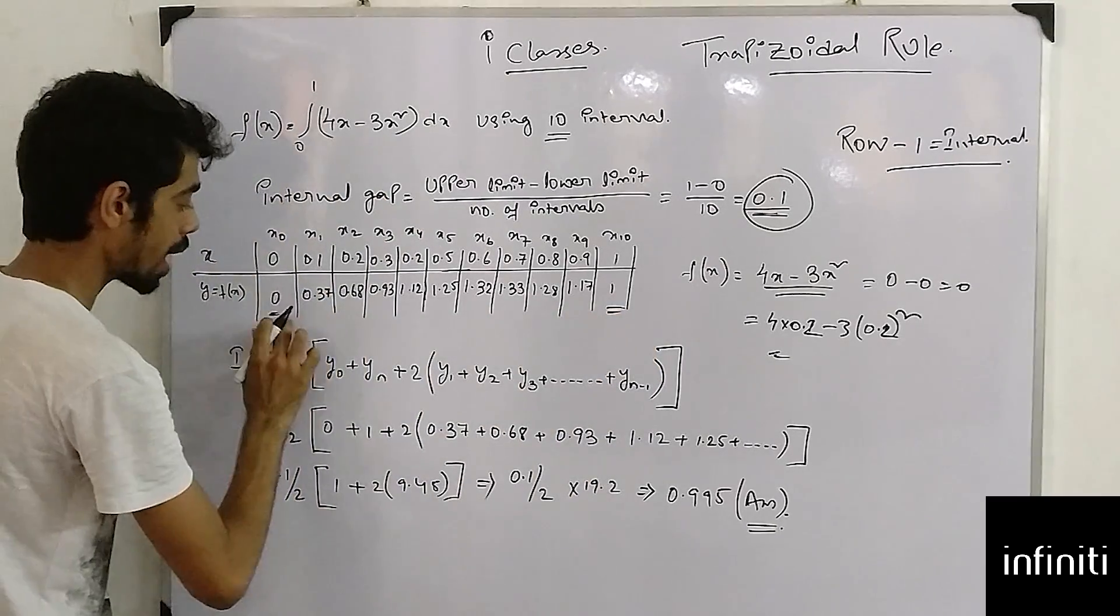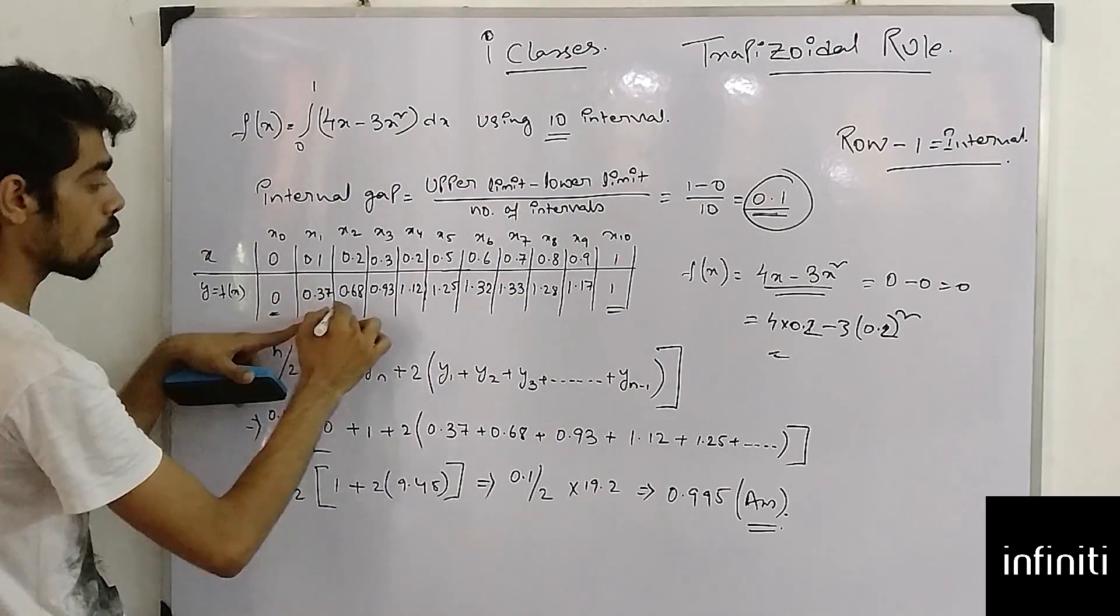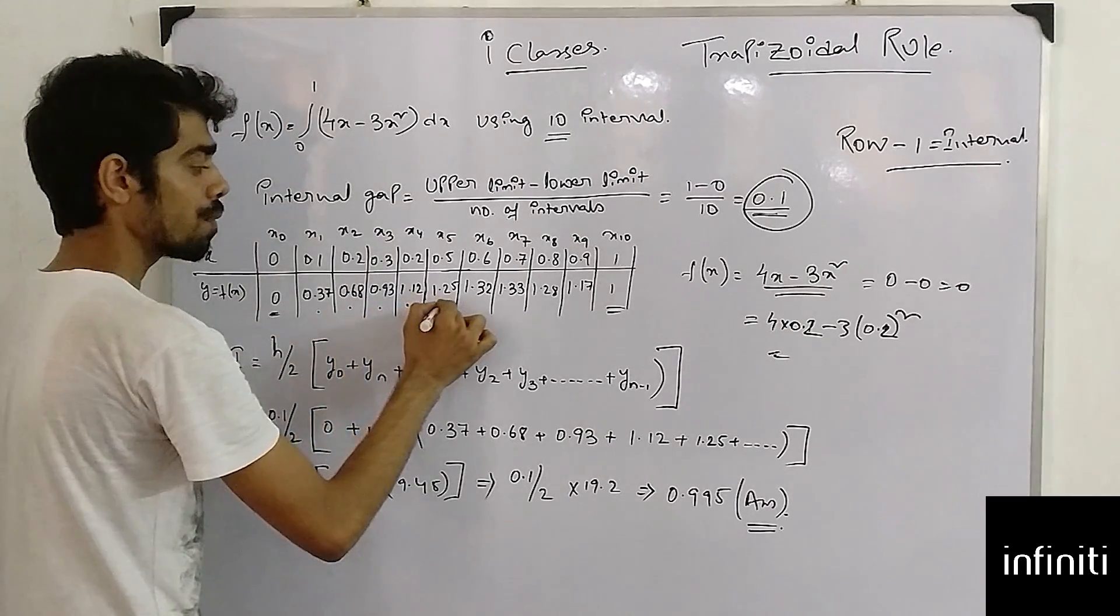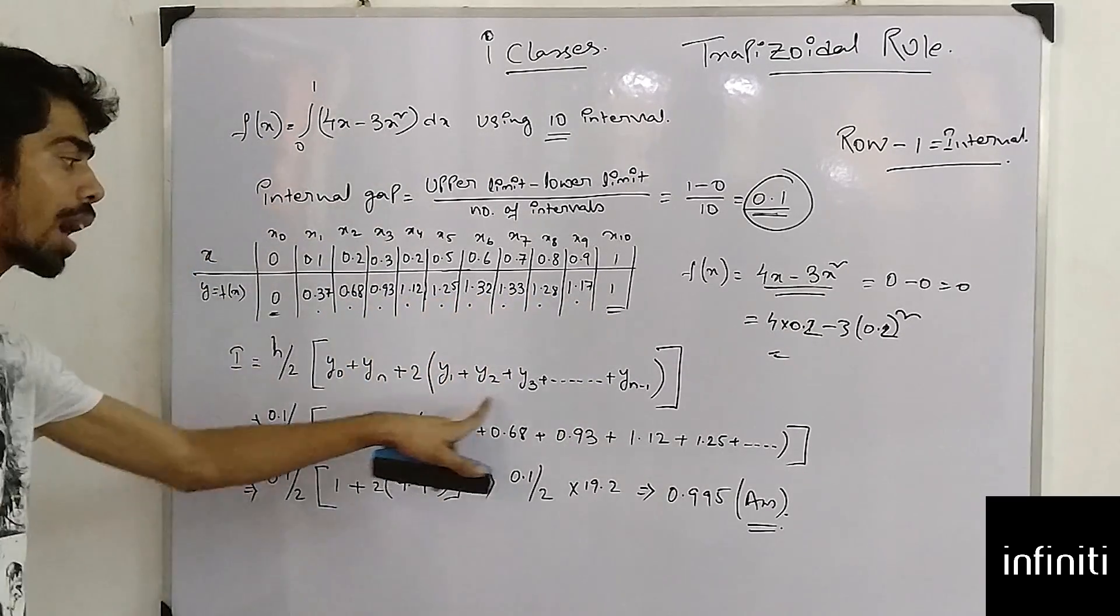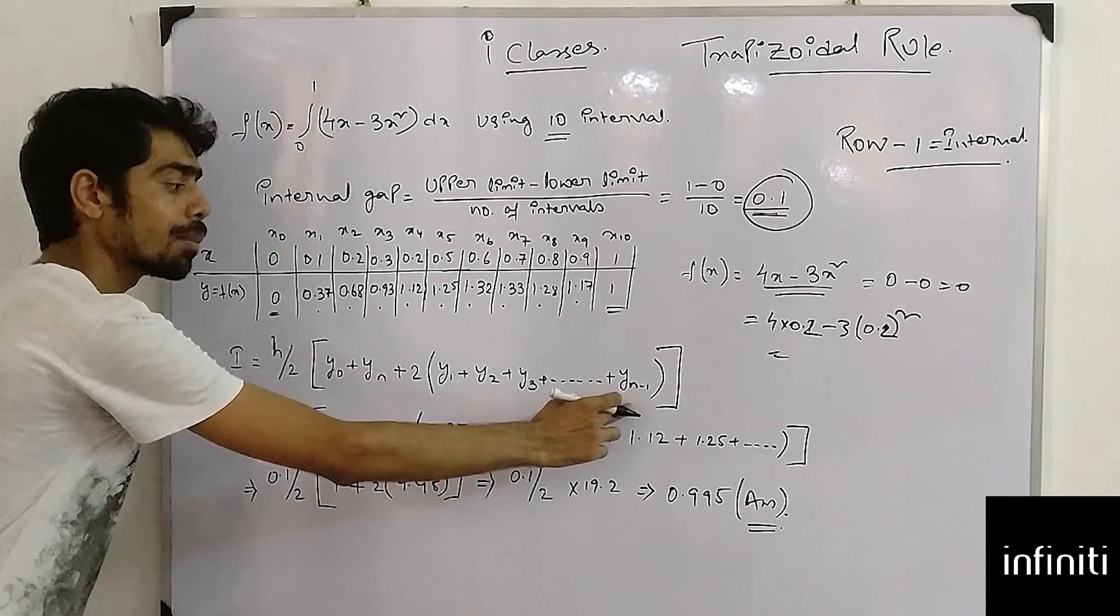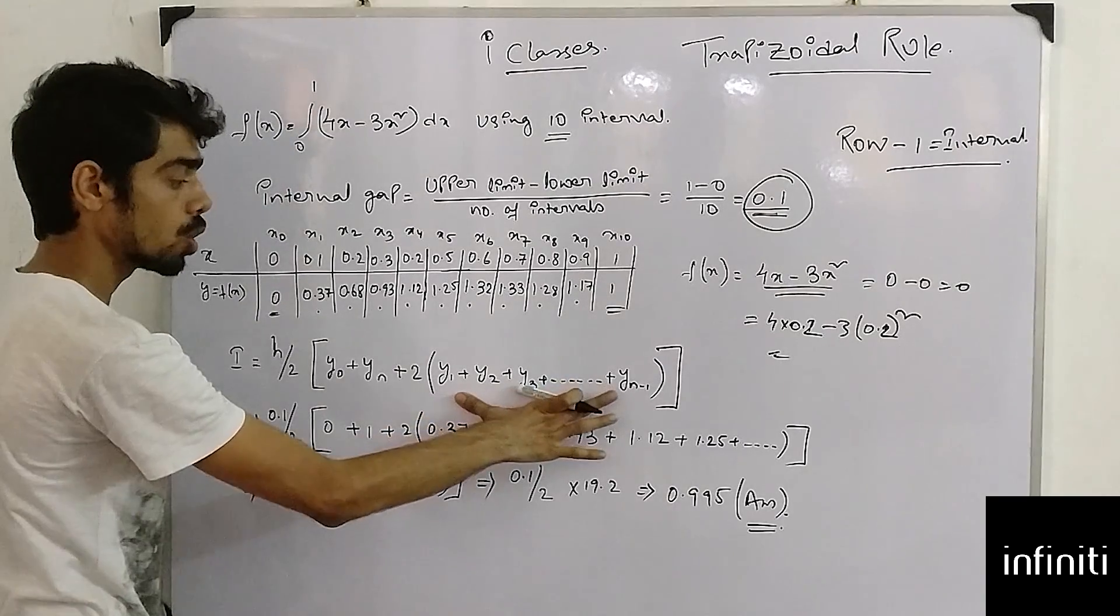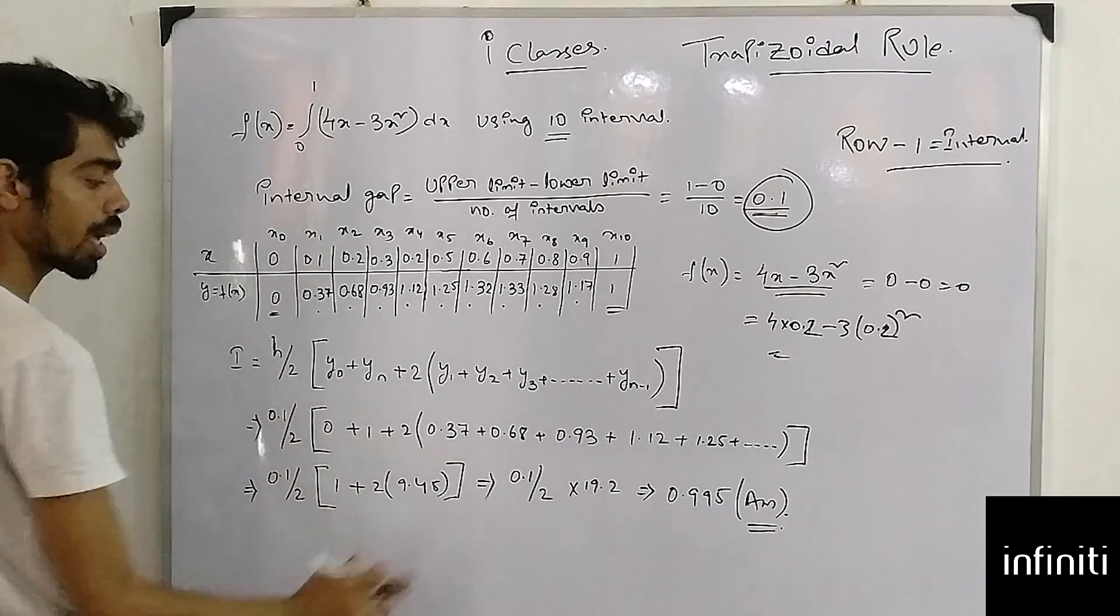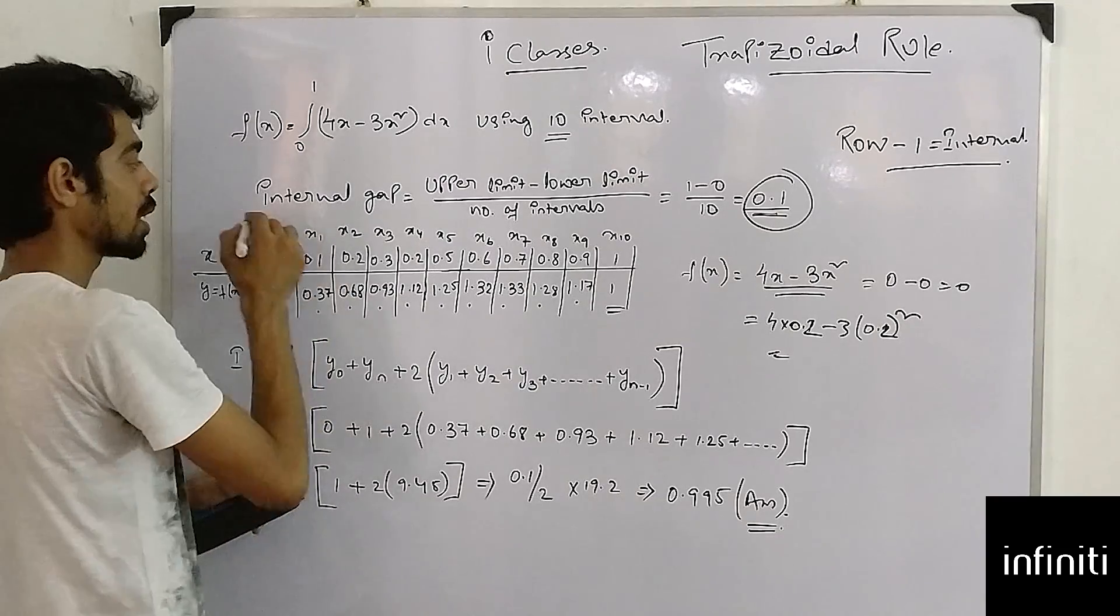y0 yn plus 2 into y1 y2 y3 y4 y5 y6 y7 y8 y9. So I have done till y n minus 1. n is my 10, n minus 1 which is 9. I have started from y1 to y9.